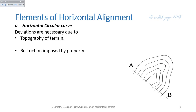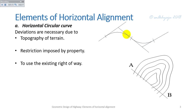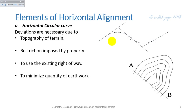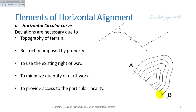Second, restrictions imposed by property — if a property lies in a particular area, we have to deviate the alignment. Third, use of existing right of way — if a right of way is provided along a certain direction, we align in the same direction to minimize earthwork quantity. Similarly, to provide access to a particular locality such as a residential area, tourist area, or world heritage site, curves are needed. These governing factors may be negative or positive obligatory points.